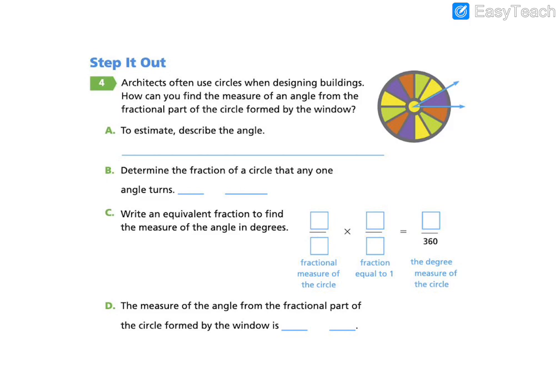So let's take a look again at our circle. Now let's remember, a circle has a total of 360 degrees. Architects often use circles when designing buildings. How can you find the measure of an angle from the fractional part of the circle formed by the window? Okay, so we're looking at this circular window here. And this circular window has sections. How many total sections are in this window? Go ahead and count them now.